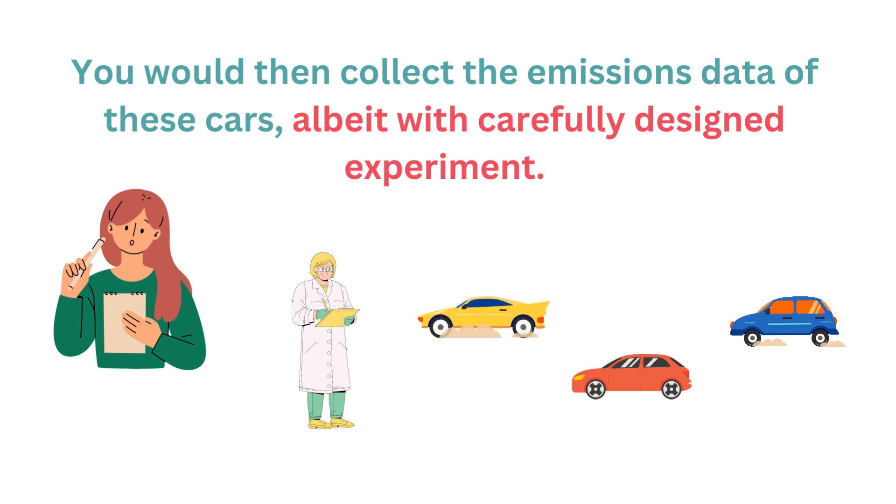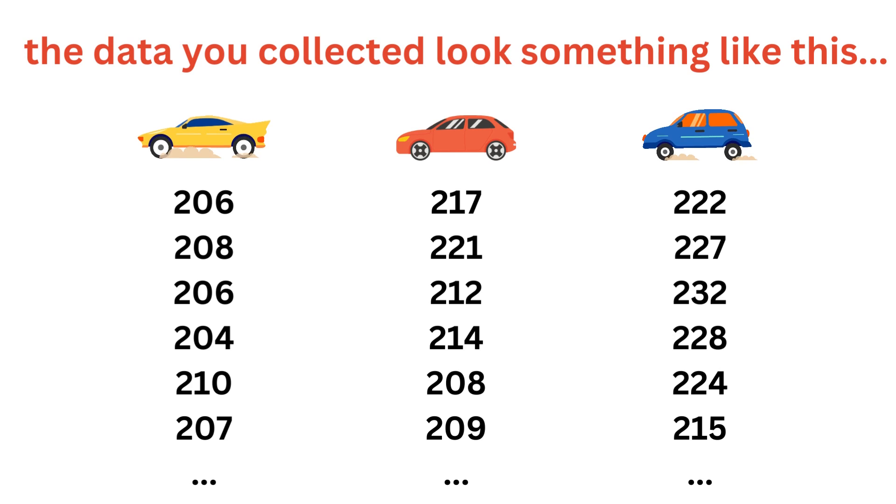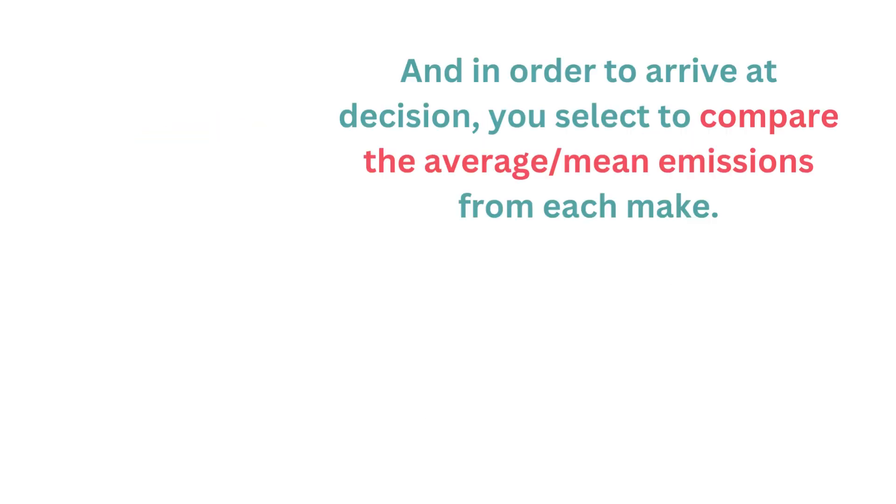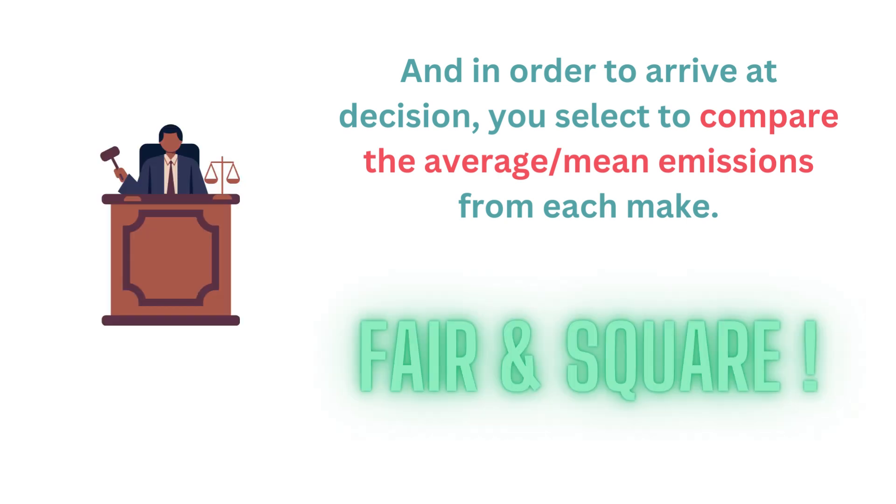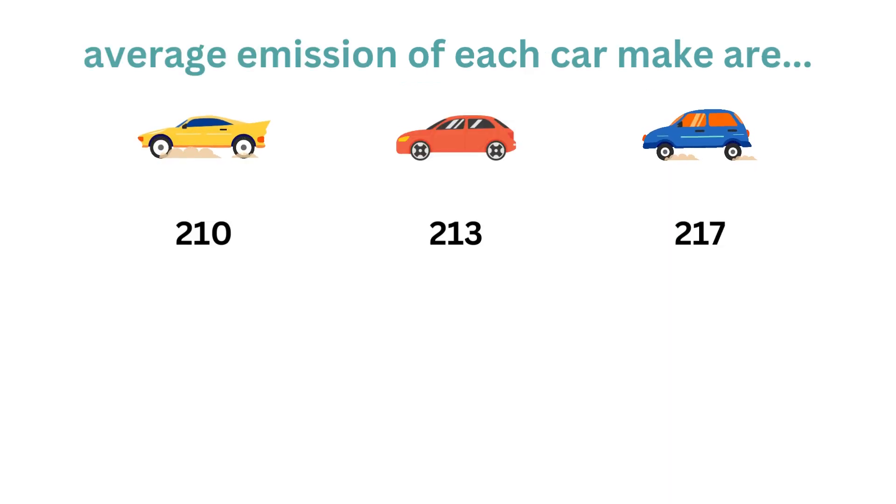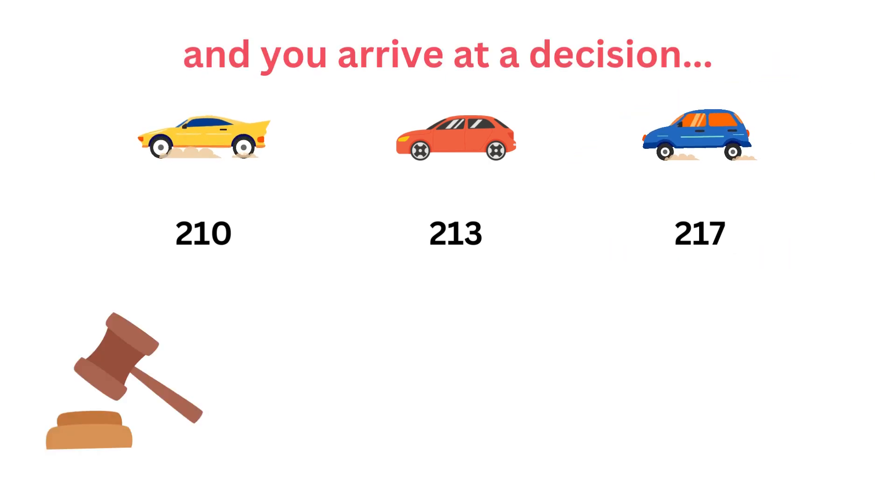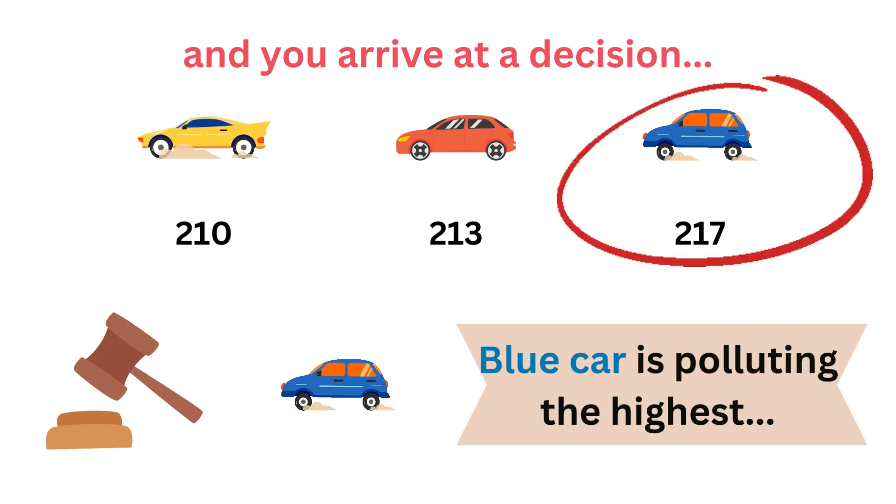Let's assume the data you collected looks something like this. Now, in order to arrive at a decision, you choose to compare the average or mean emissions from each car make. Well, it's fair and square, and average emissions of each car make are something like this. Now you arrive at a decision that the blue car is polluting more.